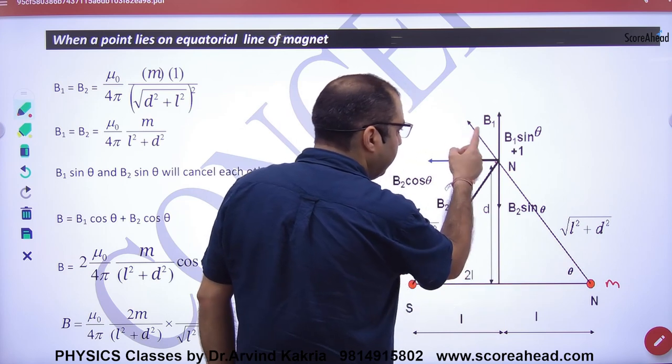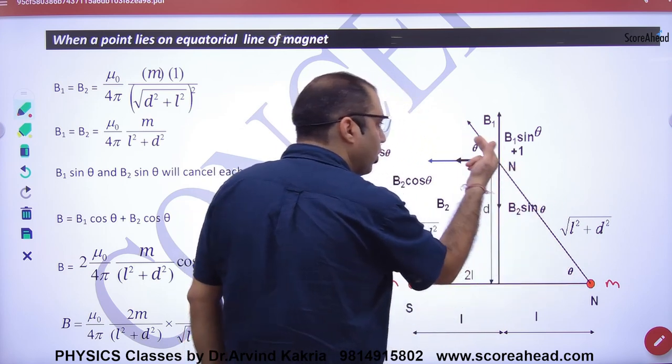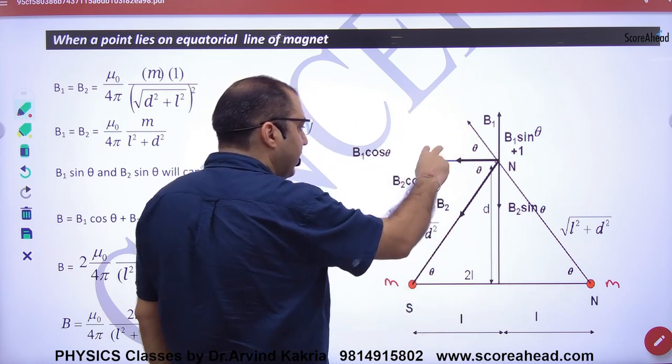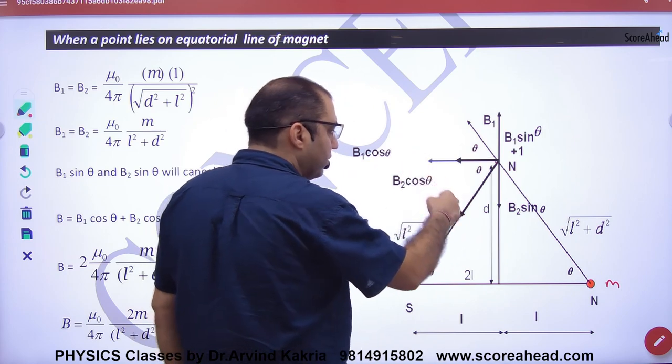Here is B1. If this is theta and this is theta, then this is theta with the alternate, this is theta with the corresponding theta. B1 has two components: B1 cos theta and B1 sin theta. B2 has two components: B2 cos theta and B2 sin theta.